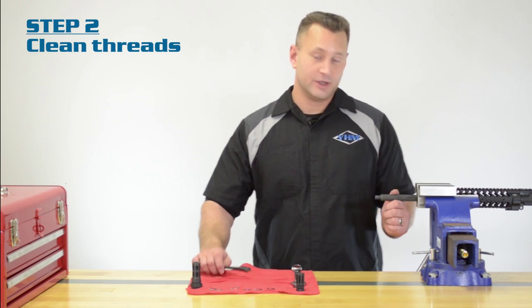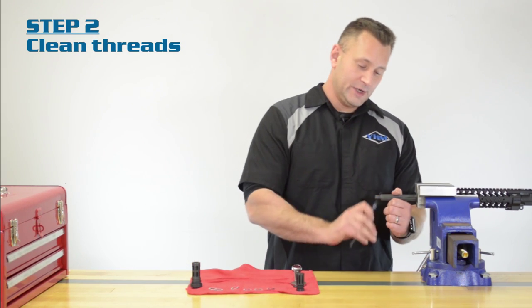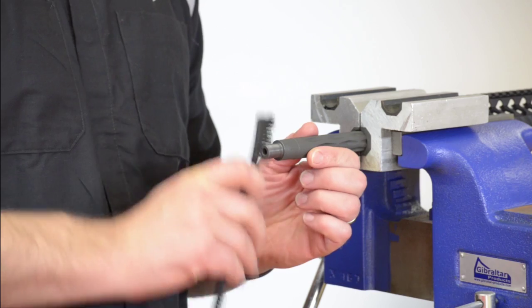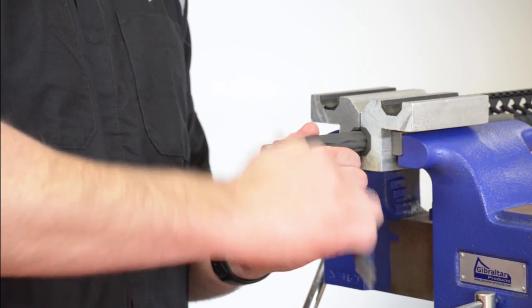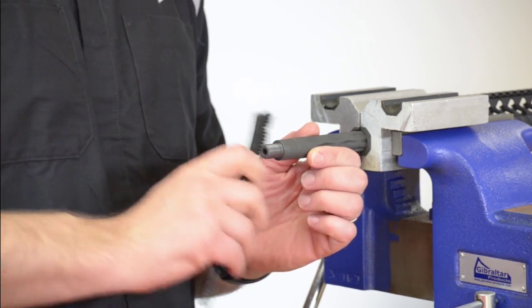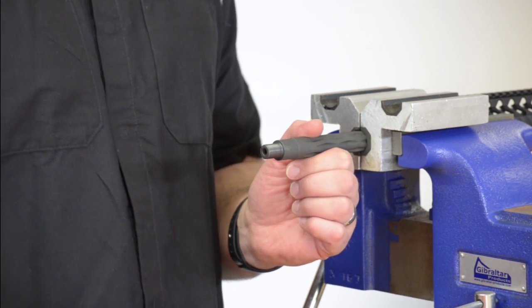Step two, be sure to clean the threads with your brush. Make sure that there's no debris or dirt or anything on here that can get bound up between the threads of the barrel and the threads of the QD mount.